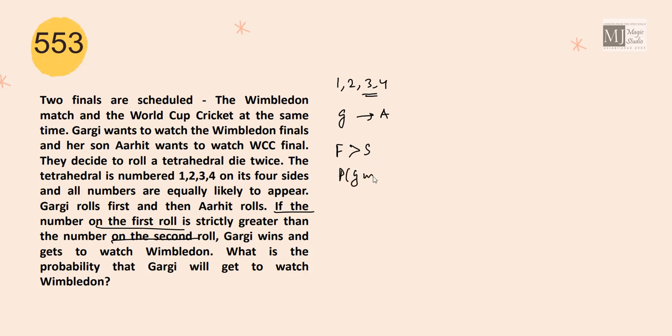Gargi win is how many times the first number is greater than the second number? Now, since the die is rolled twice, total number of cases would be 4 into 4, that is 16. Favorable cases so that Gargi could win would be 4,3 or 4,2 or 4,1 or 3,2 or 3,1 or 2,1. In all these cases, first number is strictly greater than the second one. So favorable cases would be 6 out of 16 total cases. So probability that Gargi will win is 6 by 16 that is 3 by 8.